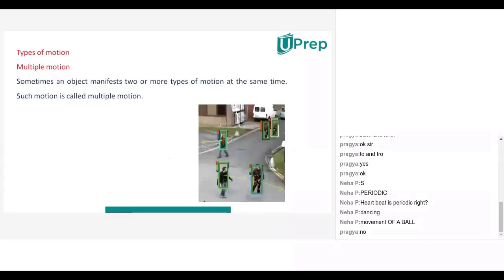Now, let us learn about multiple motions. Sometimes an object may have more than one type of motion. That means at the same time, it will exhibit more than one type of motion.